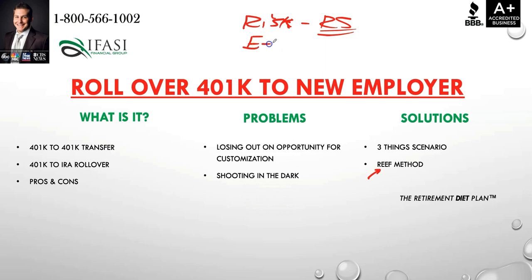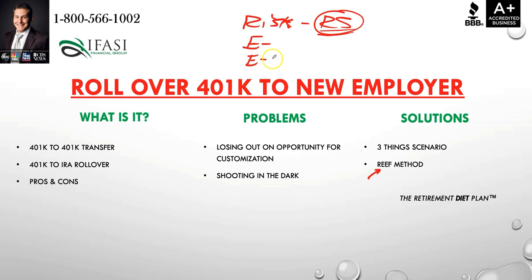E stands for Eggs — eggs in your basket. What are you currently invested in? What's your current allocation? Is there a large variance between your current allocation risk score and your personal risk score? The second E stands for Examine: examine what's available to you. Does that mean leveraging an IRA or multiple IRAs, or staying in the old 401k if there's an institutional fund not available on the IRA side?